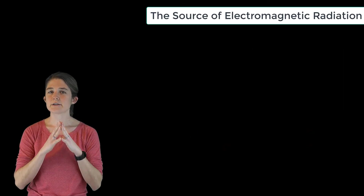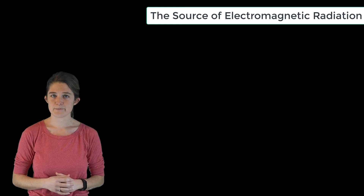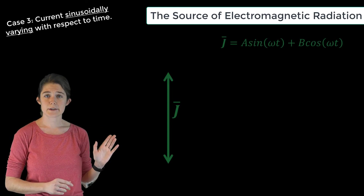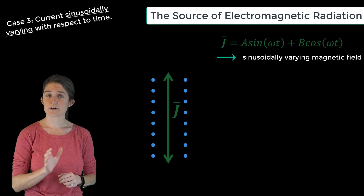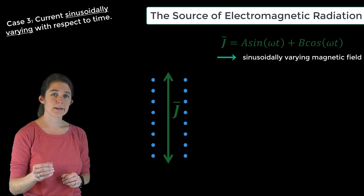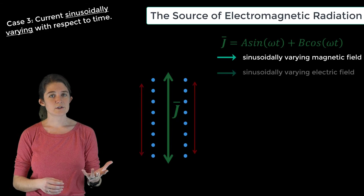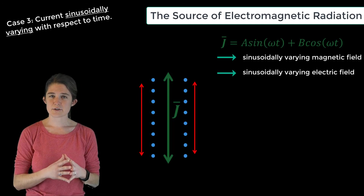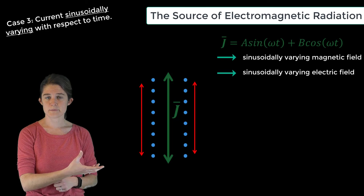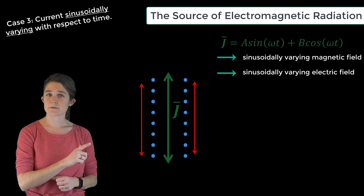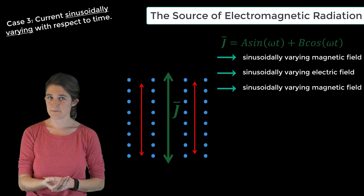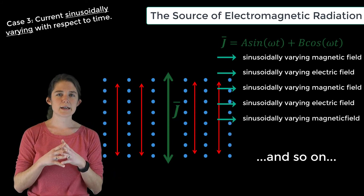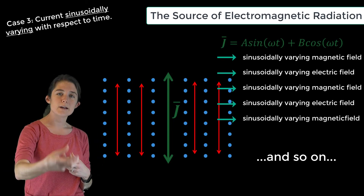Unless you can take an infinite number of derivatives without getting zero, this process always eventually dies out. However, some functions are infinitely differentiable. Consider an infinite line of sinusoidally varying current. By Ampere's law, you will get a sinusoidally varying magnetic field circling the current. This sinusoidally varying magnetic field gives rise to an electric field related to its derivative. Since the derivative of a sinusoid is another sinusoid, the electric field will also be sinusoidal. By Ampere's law again, a sinusoidal electric field gives rise to a sinusoidal magnetic field, which gives rise to a sinusoidal electric field, and so on.